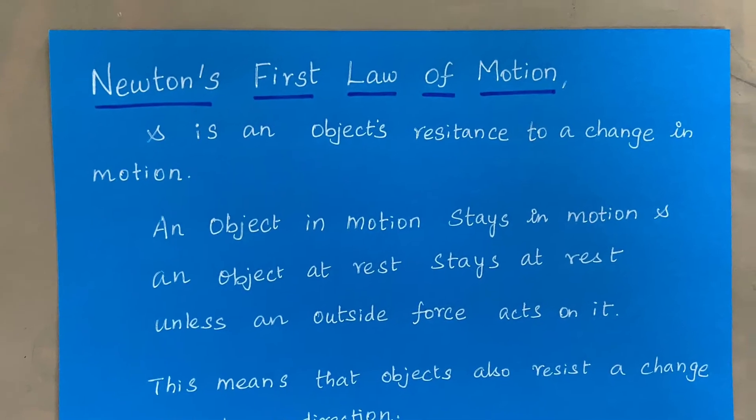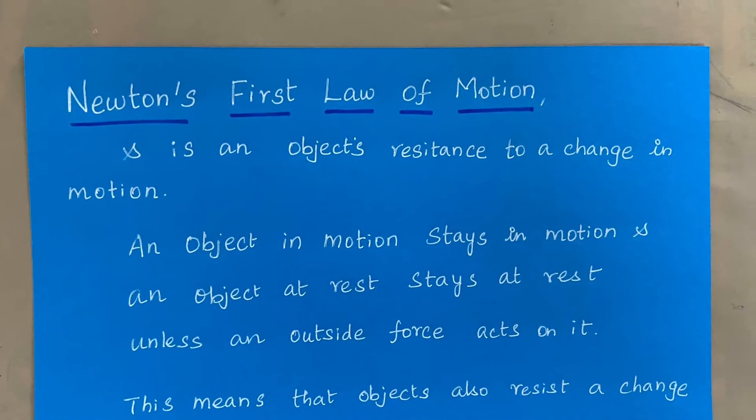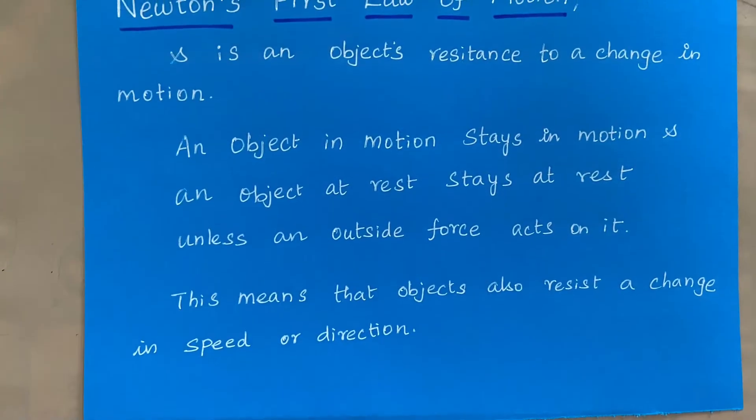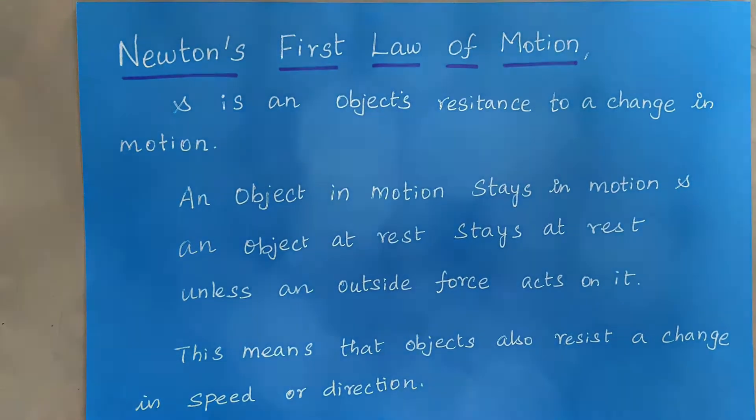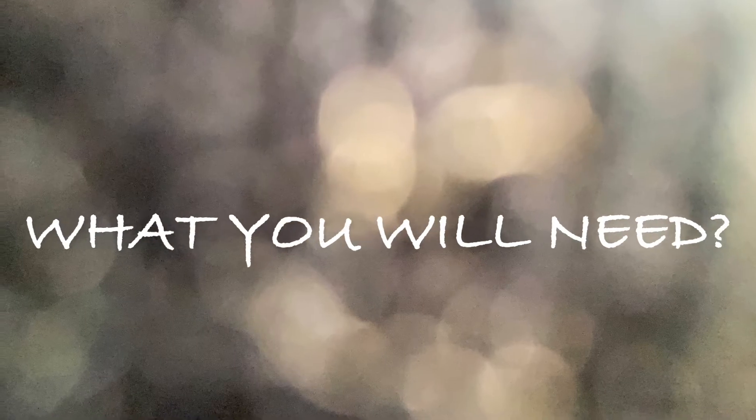An object in motion stays in motion and an object at rest stays at rest unless an outside force acts on it. This means that objects also resist a change in speed or direction. This is a simple but fun trick for kids.